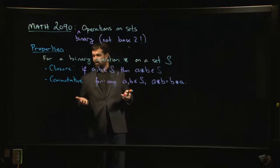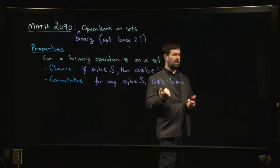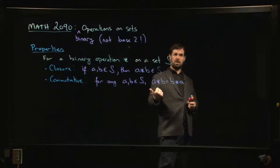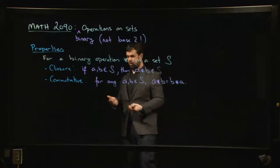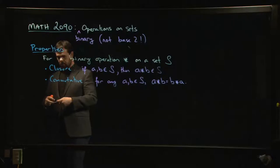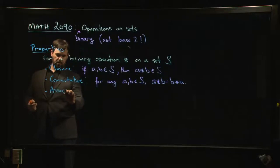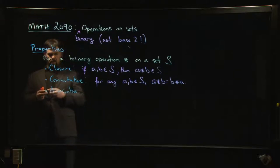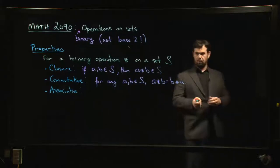A lot of binary operations are commutative. For example, the set operations we did last time — union and intersection — are both commutative. Doing A union B is the same thing as doing B union A.